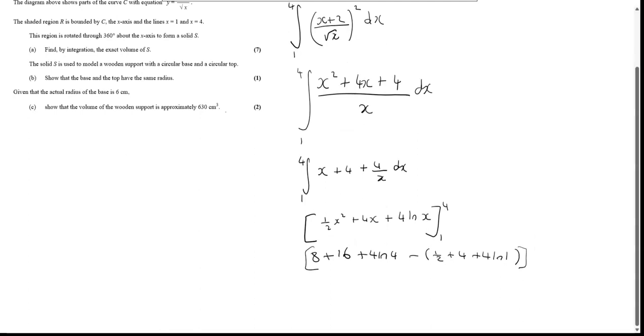9 over 2, and I'm going to do 24 minus 9 over 2. 24 is 48 over 2, minus 9 over 2 is 39 over 2, plus 4 ln 4. And that was nice, we did it, 7 marks for that.